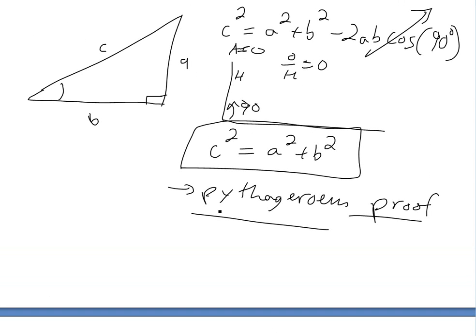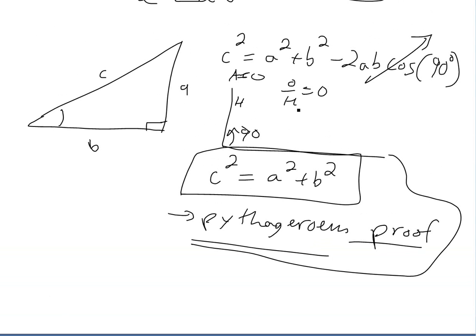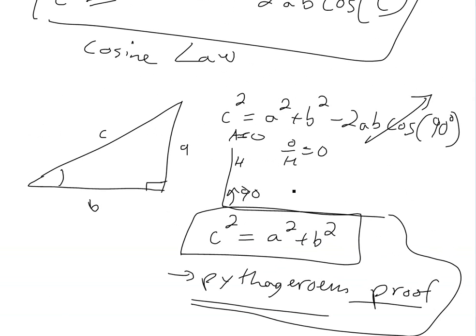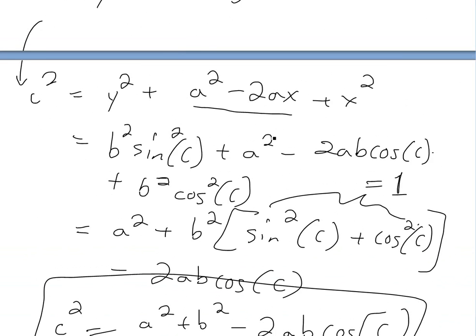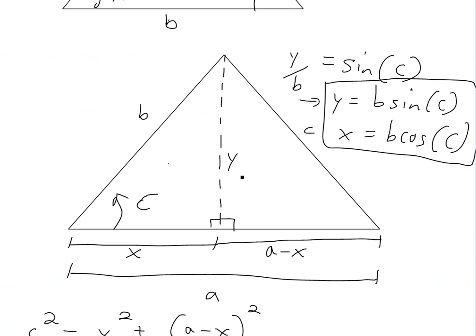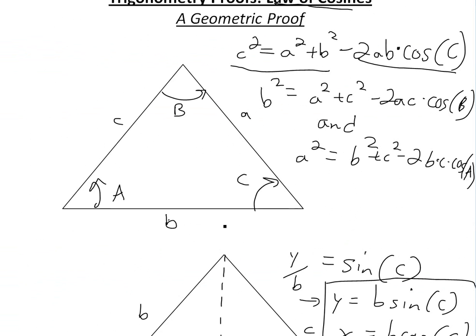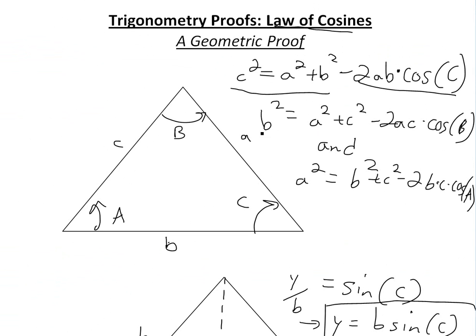You can also prove the Pythagorean theorem strictly from the cosine law. The cosine law is really useful when you don't have a right angle — all you need to know is two lengths and the corresponding included angle, and you can solve for the third length. Thanks for watching, and stay tuned for another Math Easy Solution.